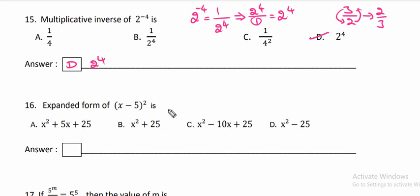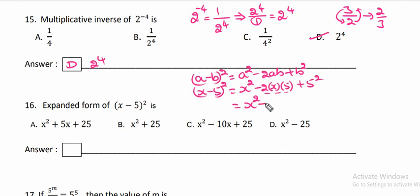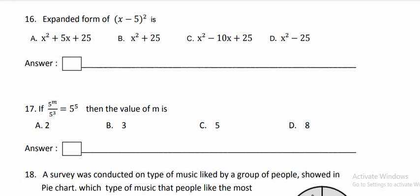The expanded form of (x minus 5) whole square is — using the identity (a minus b)² equals a² minus 2ab plus b², we get x² minus 2 times x times 5 plus 5² — that gives x² minus 10x plus 25. This is the correct answer.